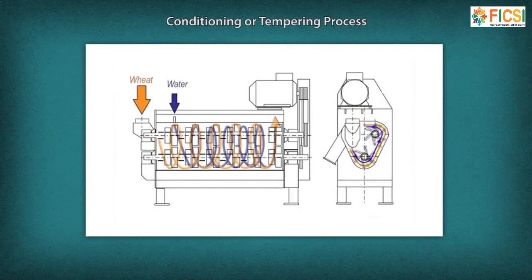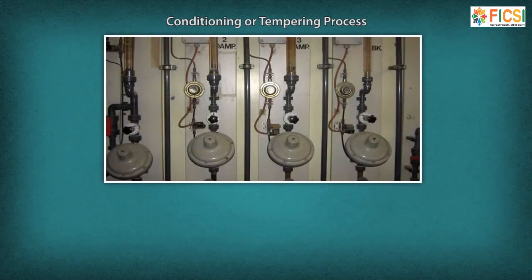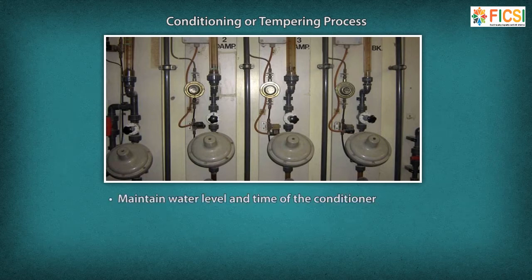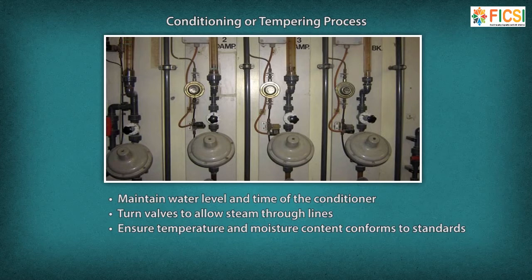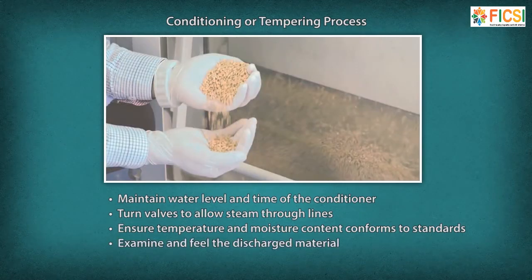Conditioning or Tempering Process: Conditioning is a process of adding water to the grains to allow maximum extraction of flour. A grain mill operator maintains the water level and time of the conditioner, turns valves to allow steam through lines, observes gauges to ensure temperature and moisture content conform to standards, and examines and feels the discharged material.